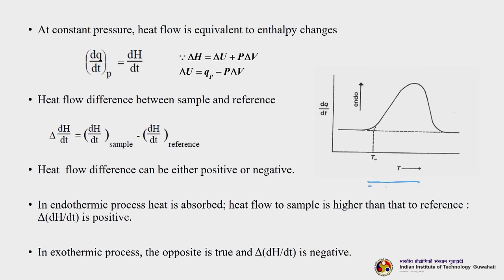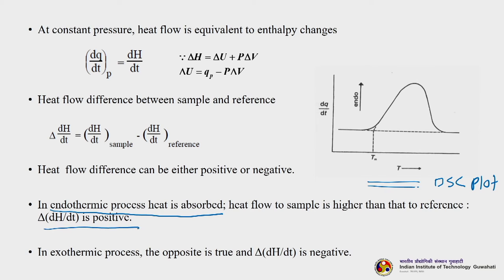Looking at a typical DSC plot of a polymeric sample — dQ/dt versus temperature. At constant pressure, heat flow is equivalent to enthalpy change: dQ/dt = dH/dt, since ΔH = ΔU + PΔV. The heat flow difference between sample and reference is ΔdH/dt = (dH/dt)_sample − (dH/dt)_reference, which can be positive or negative. In an endothermic process, heat is absorbed so heat flow to the sample is higher than to the reference, meaning dH/dt is positive. In an exothermic process, the opposite is true and dH/dt is negative.